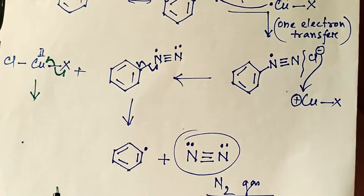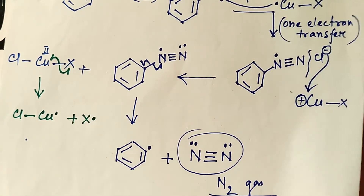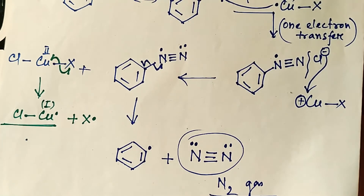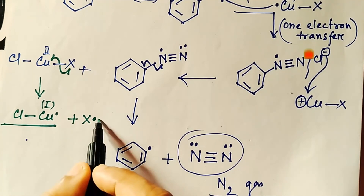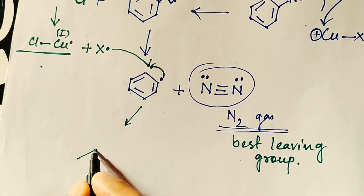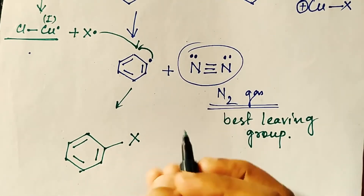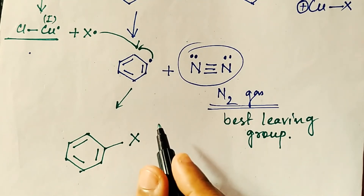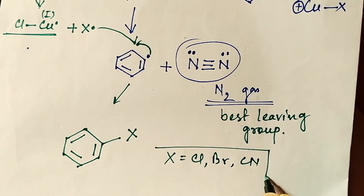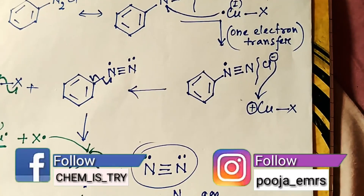From this portion, another bond breaks and copper(I) halide is regenerated — the catalyst is restored in the cycle. The X group then joins the benzene radical to form the aryl halide or aryl cyanide product. X can be chlorine, bromine, or cyanide. In this way, you can prepare aryl halide or aryl cyanide through the Sandmeyer reaction.